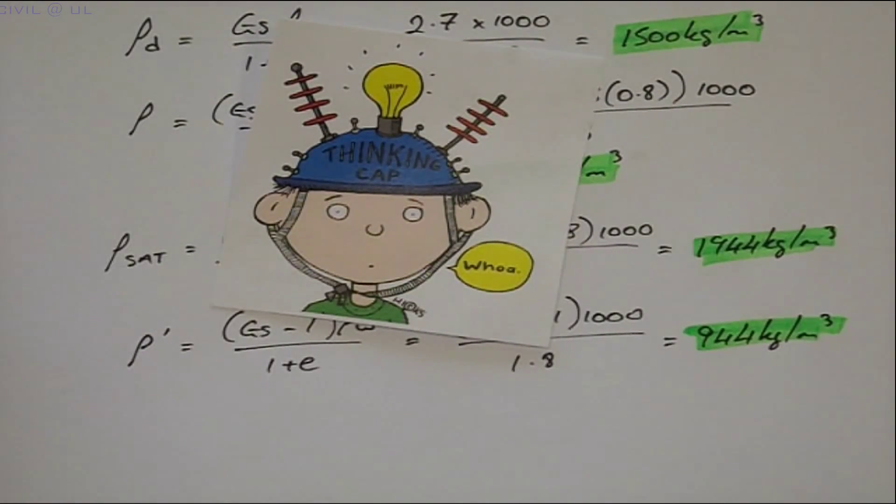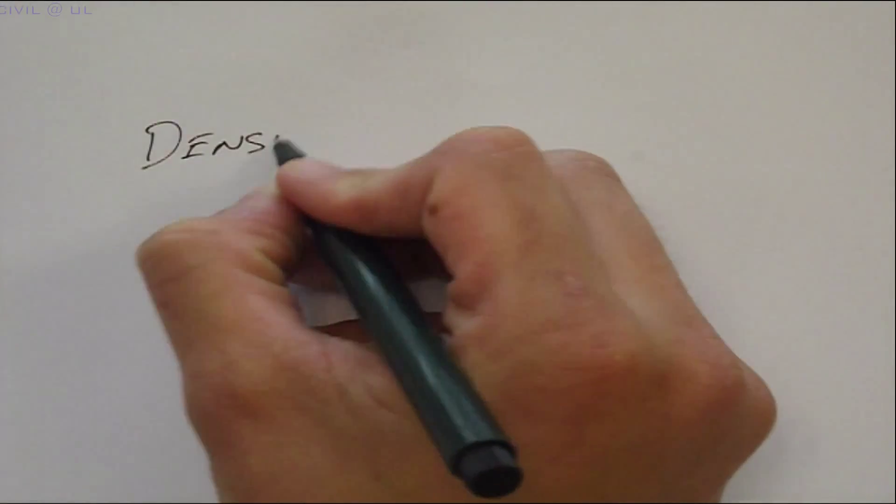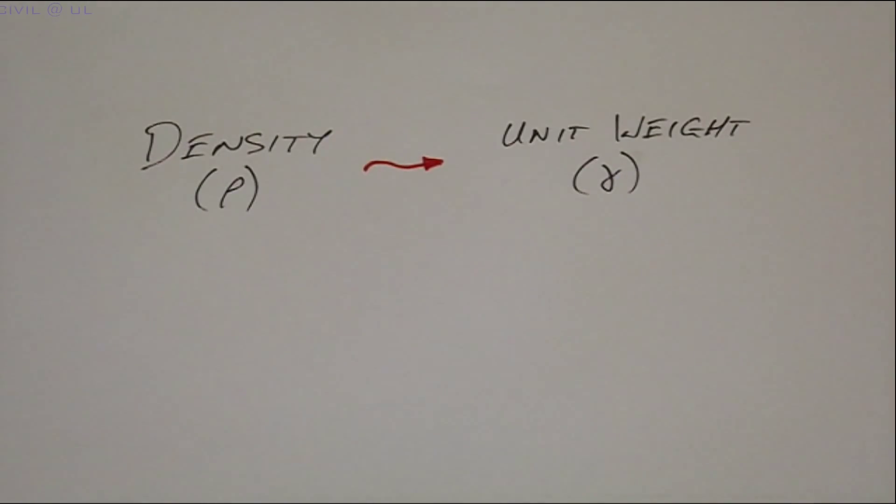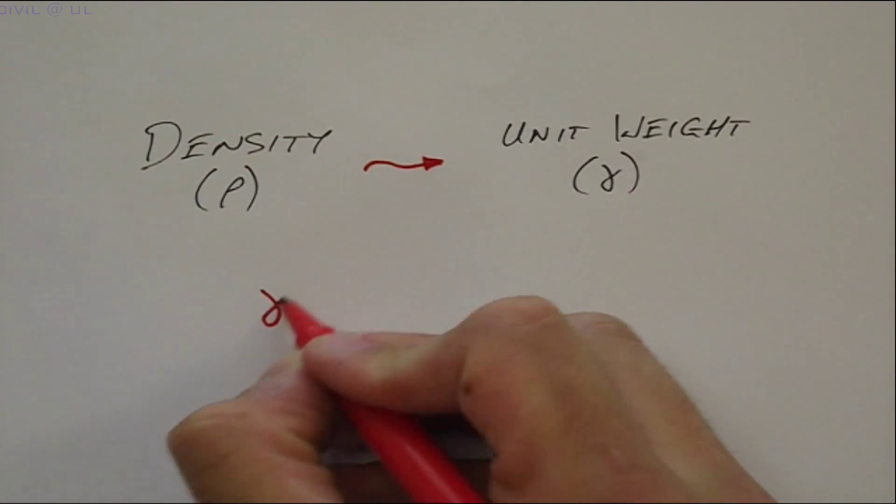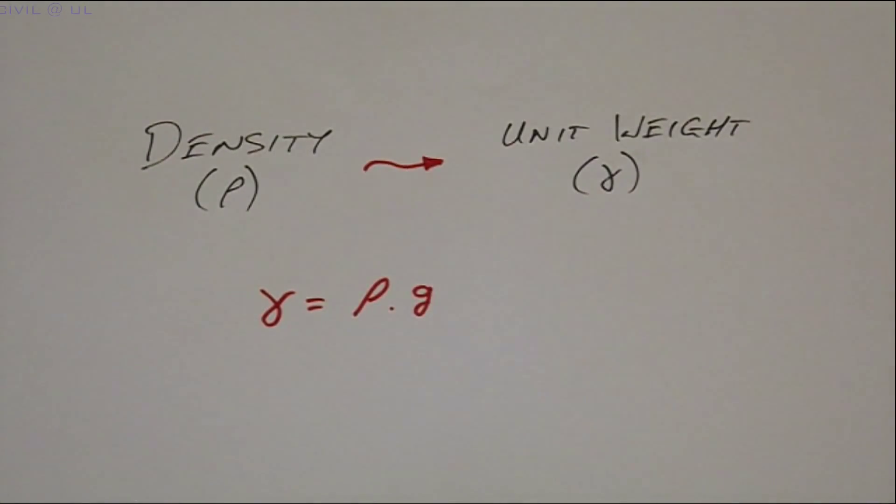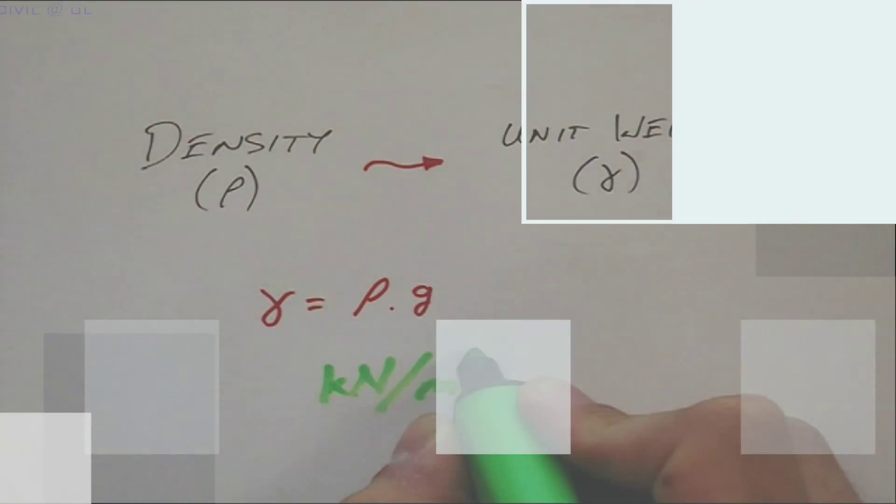Oh, and one final thing. We recall from our physics that it is a simple calculation to change from density to unit weight. We simply multiply the relevant density by the acceleration due to the Earth's gravity. And it's normal practice in geotechnics to express the result in kilonewtons per meter cubed.